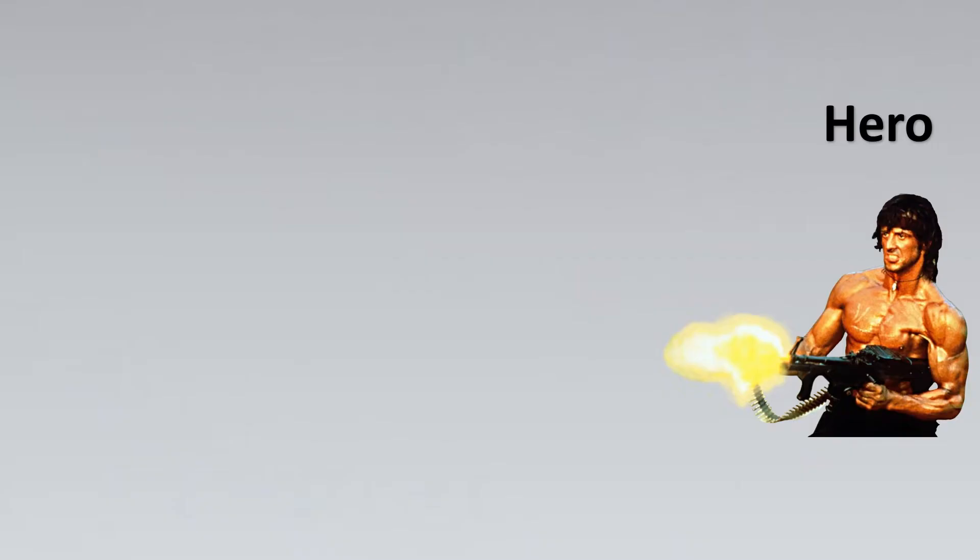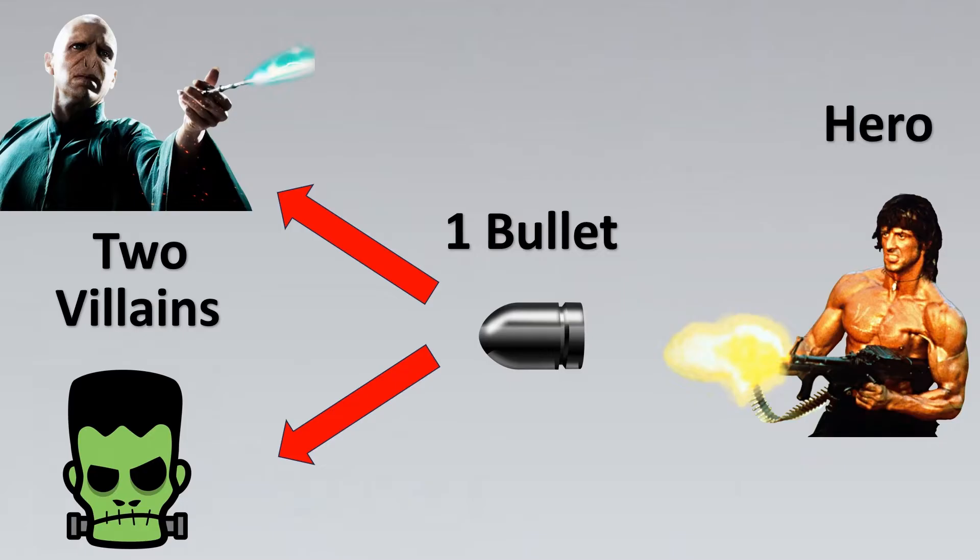Did you look at the example? There was a hero, there was one bullet but there were two villains. So basically it had to be split in order to get the work done. Now let's look at an industrial example.